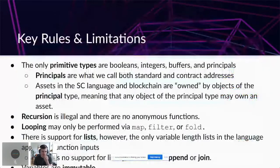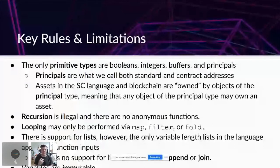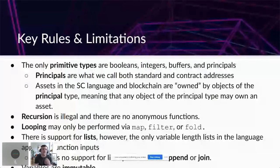Key rules and limitations: the only primitive types in Clarity are booleans, integers, buffers, and principals. Principals are what we call both standard and contract addresses — assets in Clarity are owned by objects of the principal type. Recursion is illegal and there are no anonymous functions. Looping may only be performed via map, filter, or fold. There is support for lists; however, variable list length only appears in function inputs, with no support for append or join. Variables are immutable in Clarity.